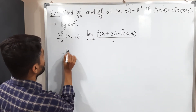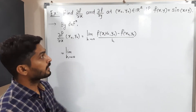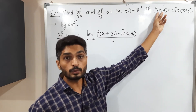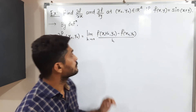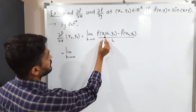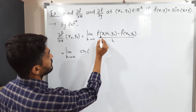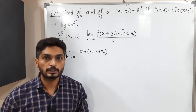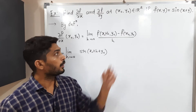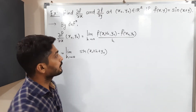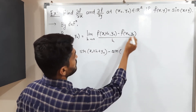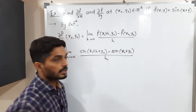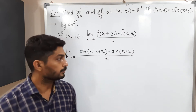Using the definition of f, where f(x,y) = sin(x + y), we simply add the two components inside the sine. So f(x₀ + h, y₀) = sin(x₀ + h + y₀), and f(x₀, y₀) = sin(x₀ + y₀). This gives us limit h→0 of [sin(x₀ + h + y₀) − sin(x₀ + y₀)] / h. We cannot find this limit directly.